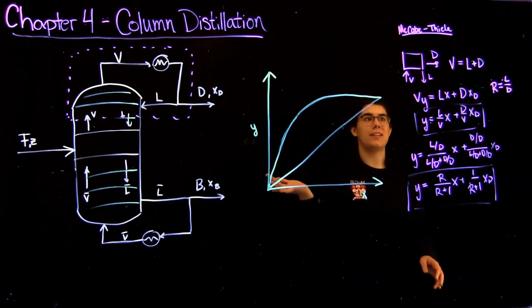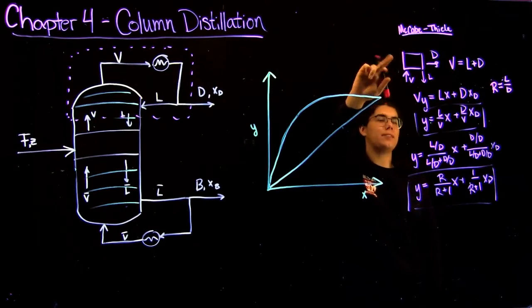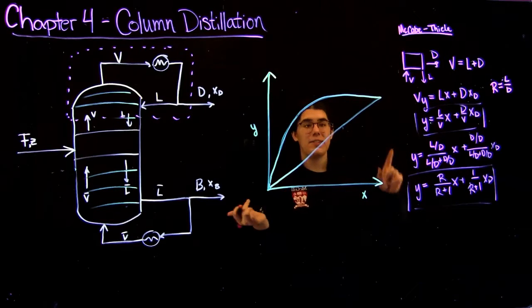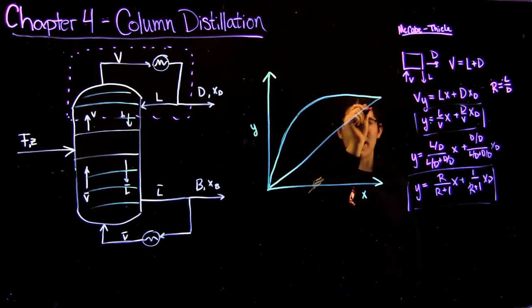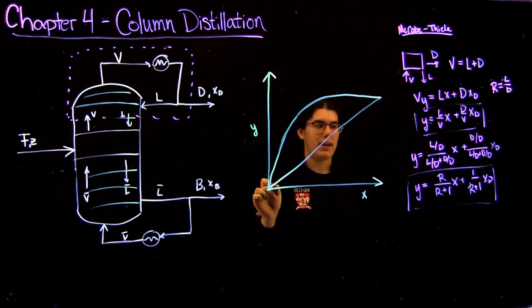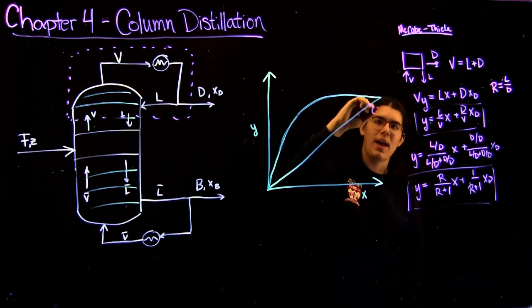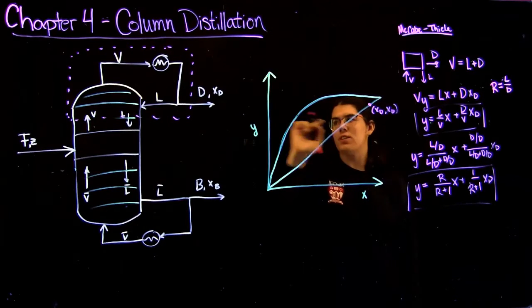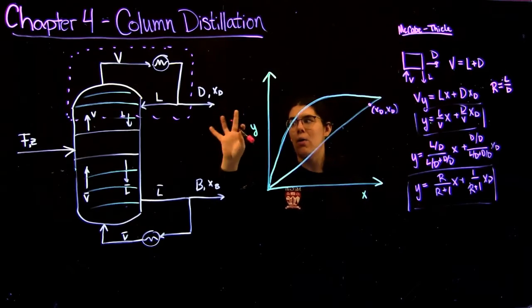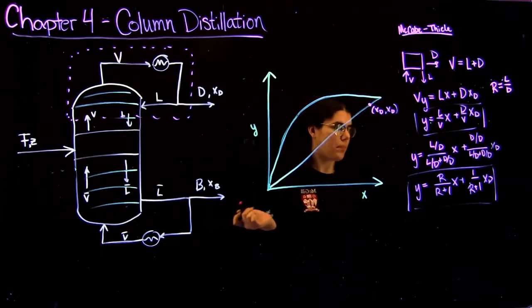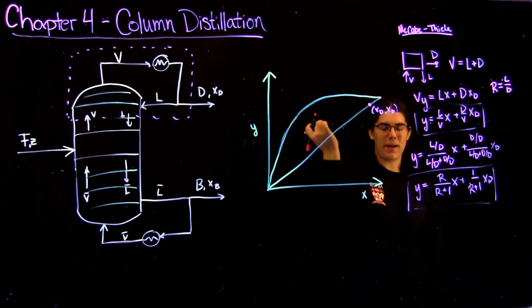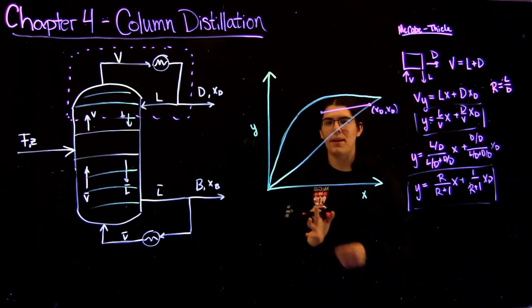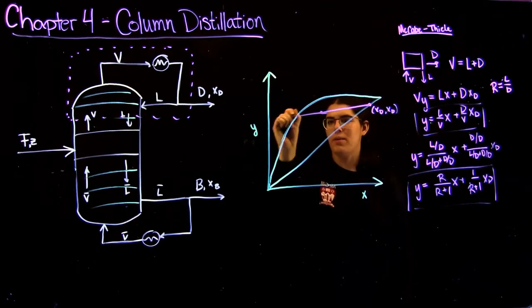A really good tip: if you're stuck on a distillation problem, just set up a control volume and do a mass balance around it to see what you can find. To plot the top operating line for the McCabe-Thiele method, you have your y equals x line and your equilibrium line. The first step is to put a point at (XD, XD) on the y equals x line — XD is always specified as a column design target. From there you can find the slope and plot the top operating line.